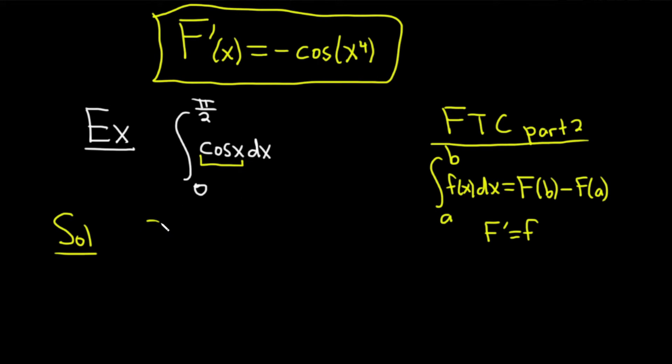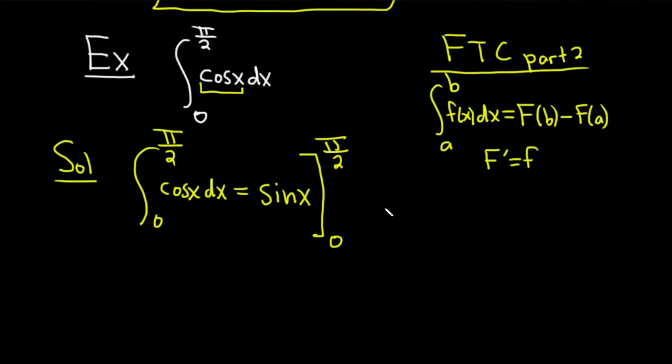So this definite integral, 0 to π/2, cosine x with respect to x. Since the derivative of sine is cosine, the integral of cosine is sine. So you write sine x. You don't put the plus c because it's a definite integral. The c's would go away. And then you go from 0 to π/2. You can use a bracket, or a line, or two brackets. It doesn't matter.